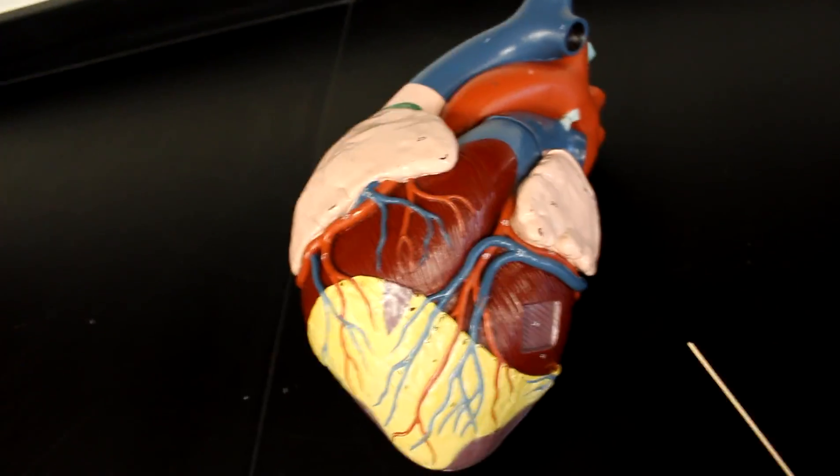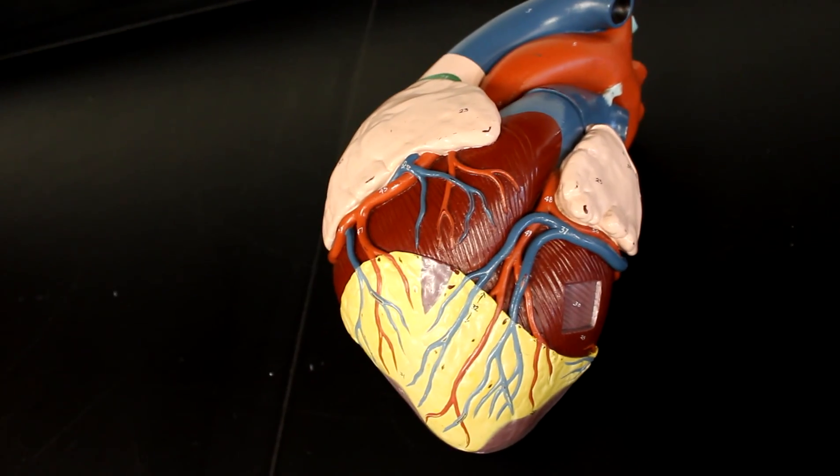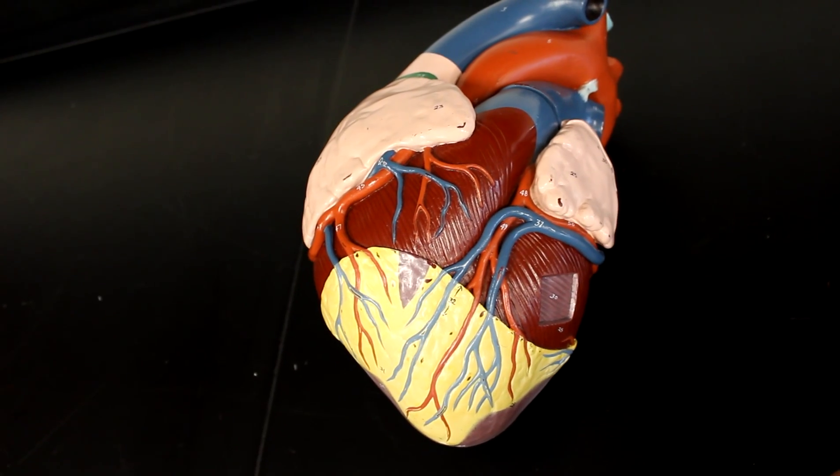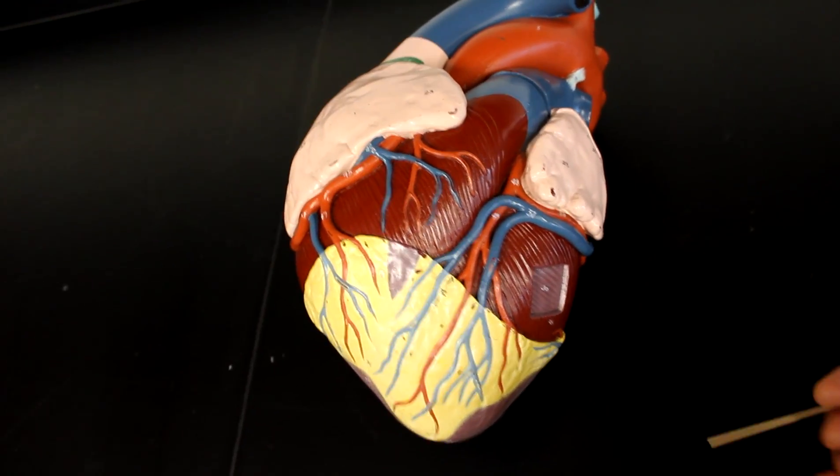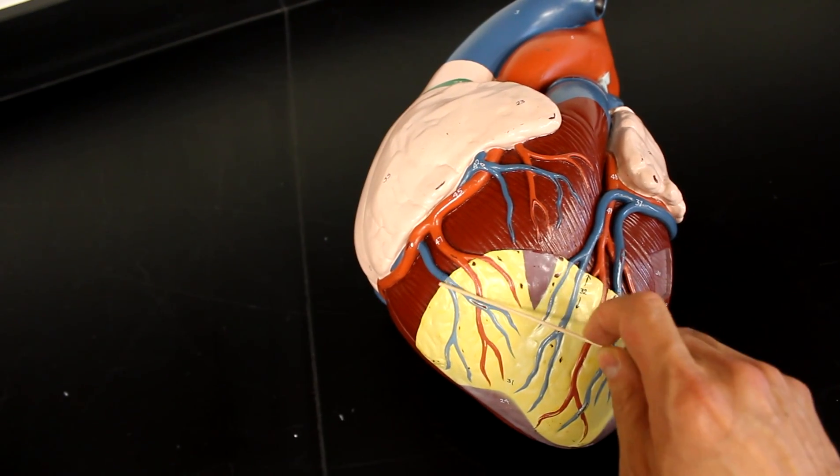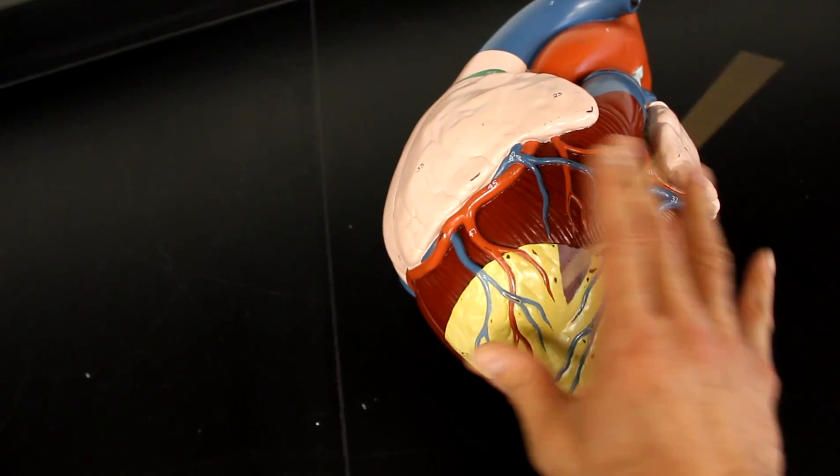If you know the arteries, the veins become very simple. All three of the veins that we need to describe are considered the cardiac veins, and we have the great, middle, and small. The small travels along with the marginal branch, kind of comes along with the right—so that's the marginal branch here.